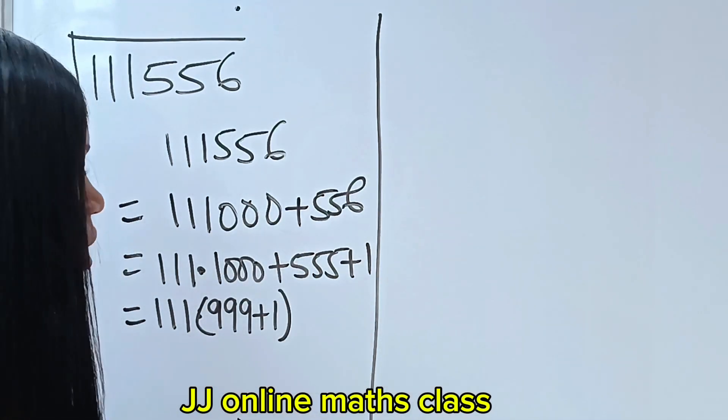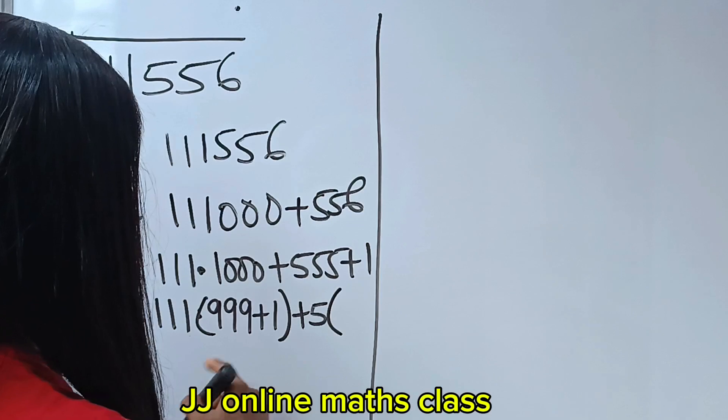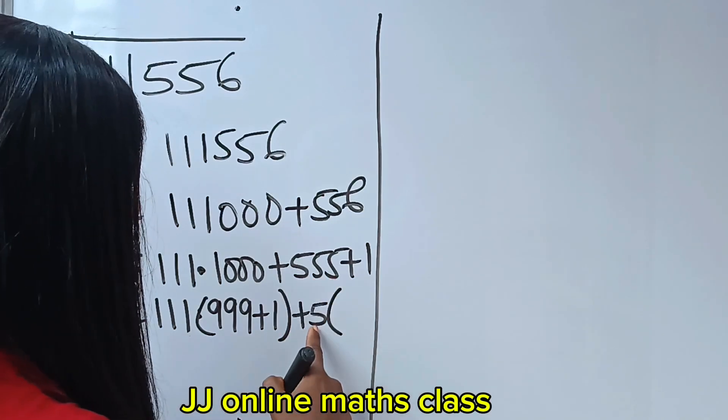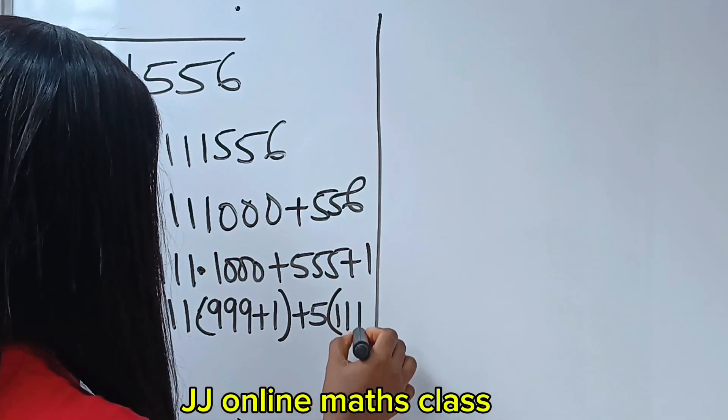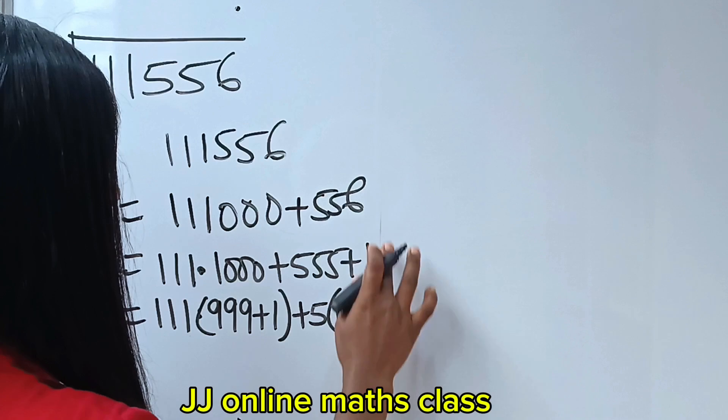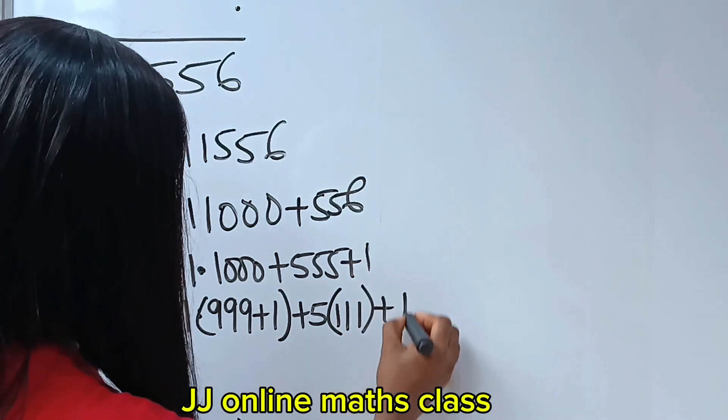Then plus 5 brackets. Now, this 555 is the same thing as 5 multiplied by 111. 5 multiplied by 111, then plus 1.